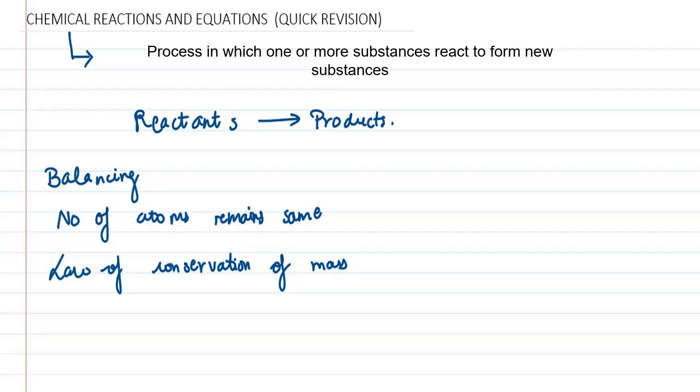First is combination reaction. This is a very important part. In combination reaction, two or more substances combine to form a single substance. For example, calcium oxide when reacts with water gives us calcium hydroxide. In this case we have two reactants and one product forms, so this is a combination reaction.